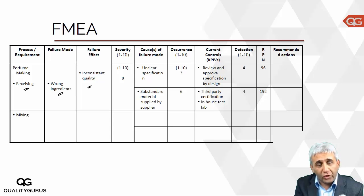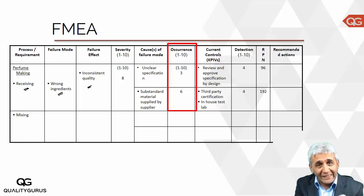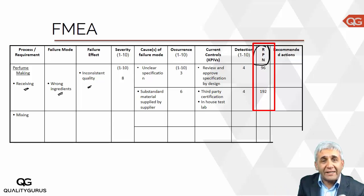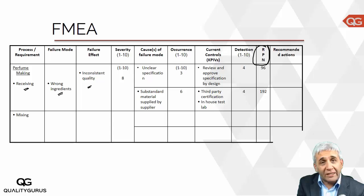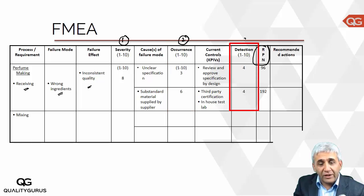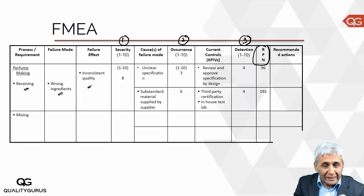When we look at failure modes, we look at three things: what is the severity, what is the possibility of occurrence, and what is the chance of detecting it. These three components together form one single number known as the RPN — Risk Priority Number. Higher the RPN, the more critical the failure mode. Severity, occurrence, and detection multiplied together give you the RPN.